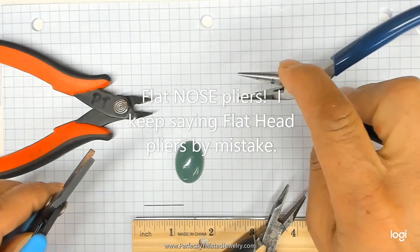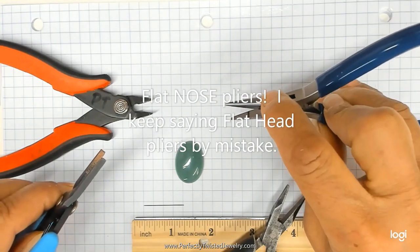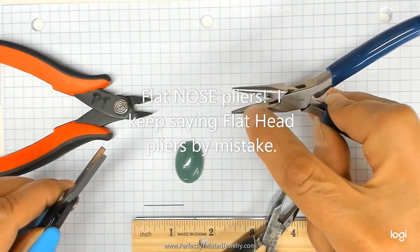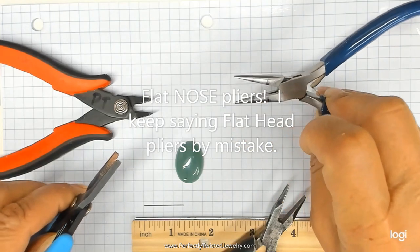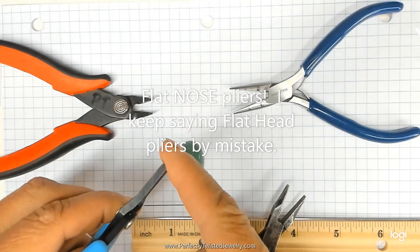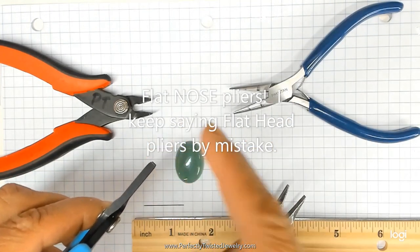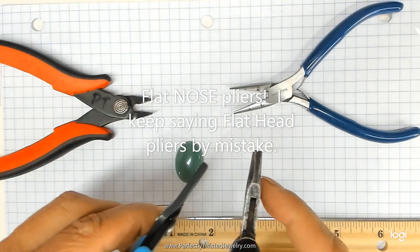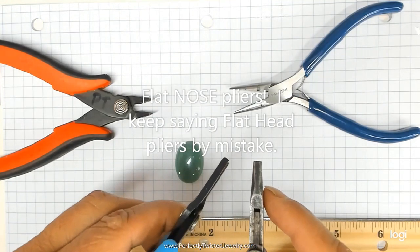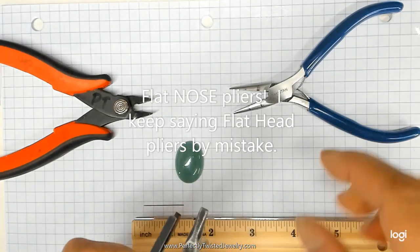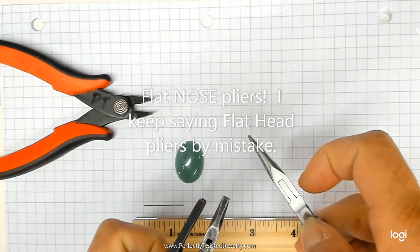Chain link pliers have a point at their tooth. They start wide and go very narrow to a point, whereas flat head pliers are literally blunt at their ends. These two pliers are both flat head pliers, and this plier is a chain link plier.